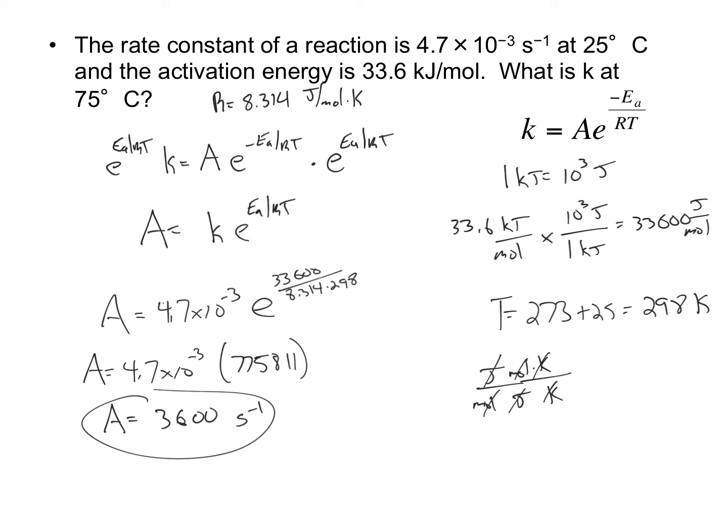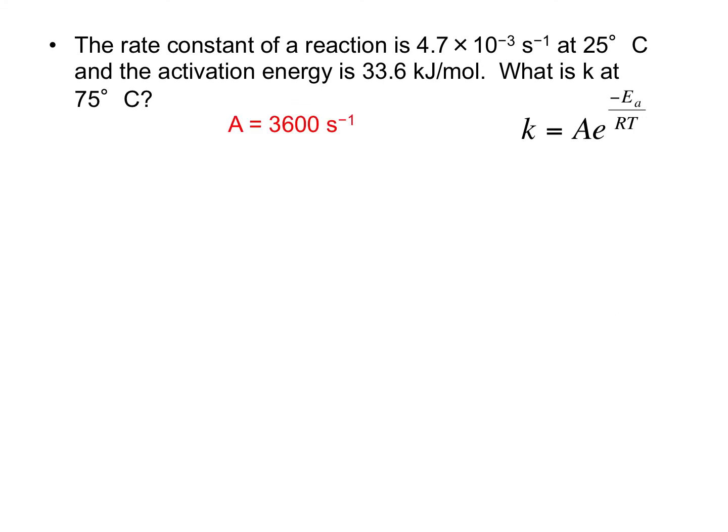All right, now we're not done, that's the first part, but we're out of room, so I'm going to go on to the next slide where we can finish the calculation. All right, so in the last slide, I determined the frequency factor to be this, and now I have all the information I need to calculate the rate constant at 75 degrees Celsius.